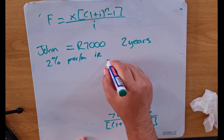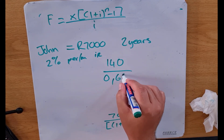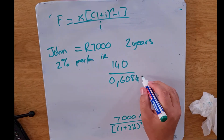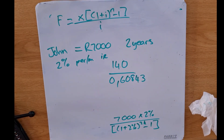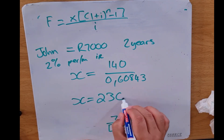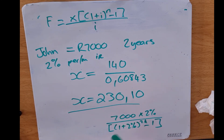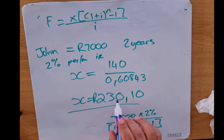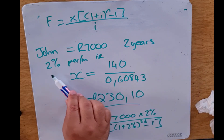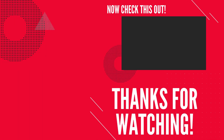So 7000 times 2 percent works out to 140, and we're dividing that by 0.60843. That gives us x equals 230.10. So John must save 230 rand and 10 cents per month in order to accumulate 7000 rand in two years at two percent interest per month. I hope that helps you understand the savings formula, whether you're solving for the final amount or solving for the monthly deposit.